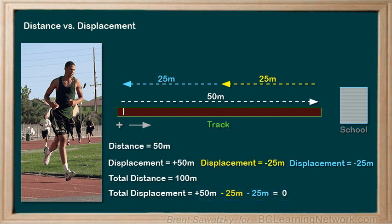Note that this would all be true if we used other forms of direction. For example, 50 meters north plus 25 meters south and another 25 meters south would add up to zero as well.